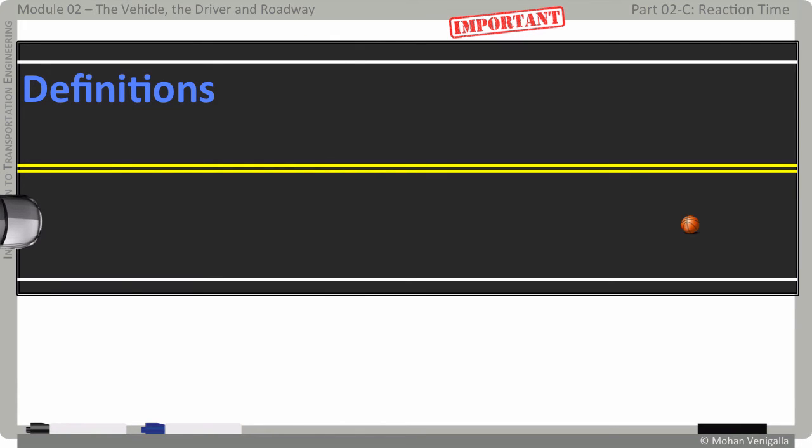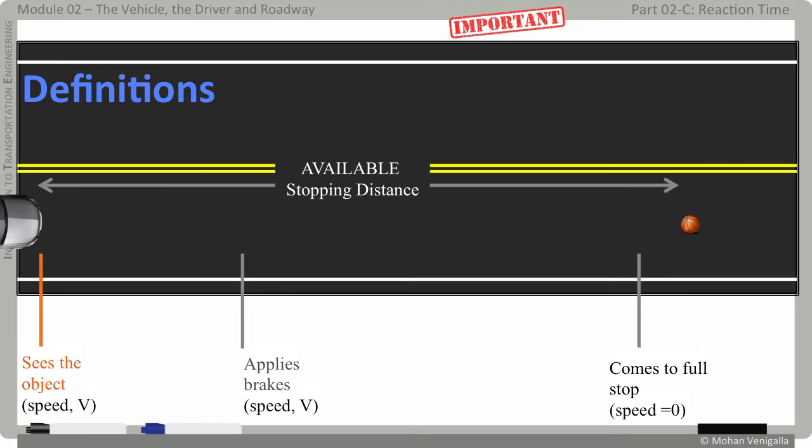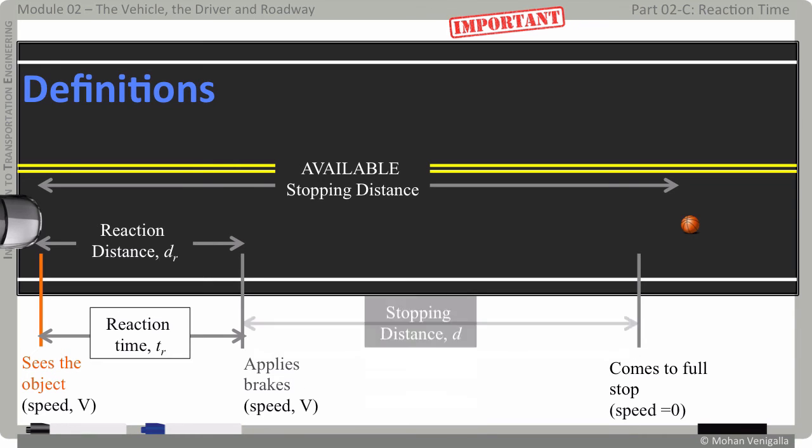Let's unclutter the previous illustration and remark the pavement. First, this is the available stopping distance for Bob. These lines delineate important events during vehicle stop and here we have the reaction time and the distance traveled during the reaction time is called reaction distance. Keep in mind, during the reaction time, the vehicle is still going at the same initial velocity V and as the brakes are applied, vehicle starts decelerating and the distance traveled from time brakes are applied to the time of coming to full stop is called stopping distance.